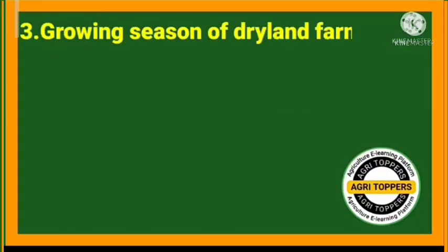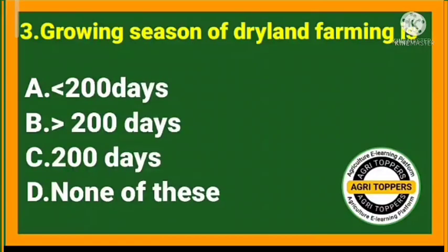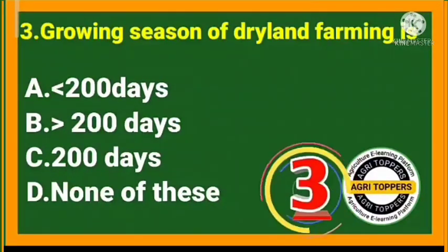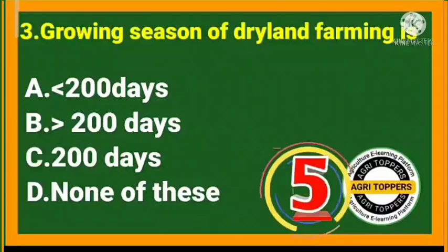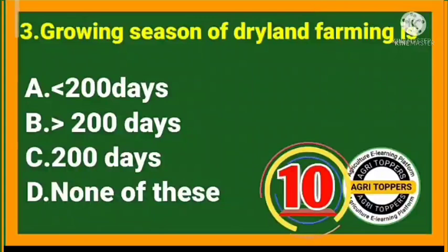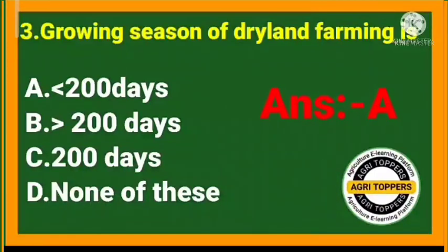Third question: the growing season of dry land farming is less than 200 days.